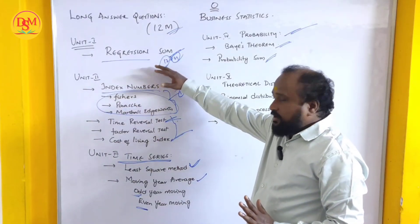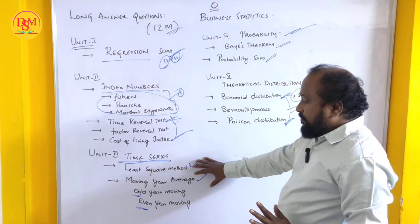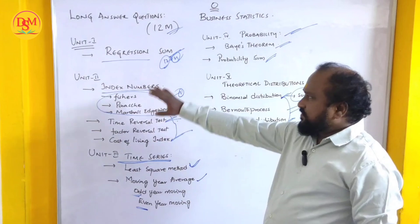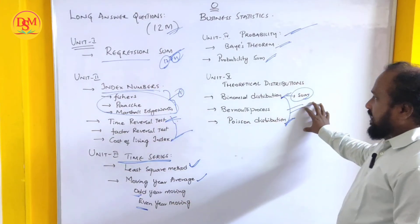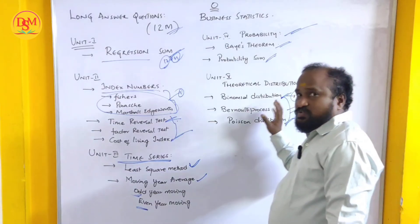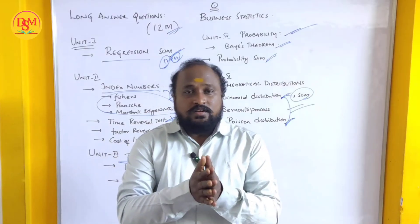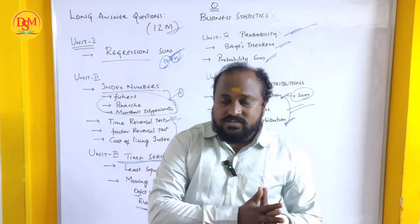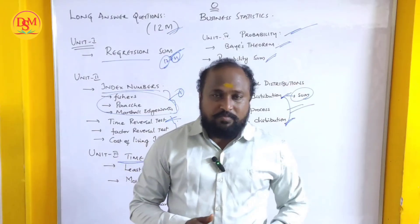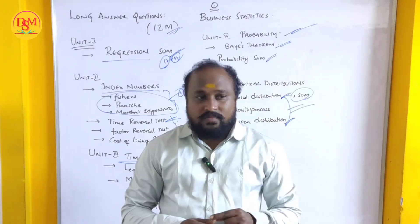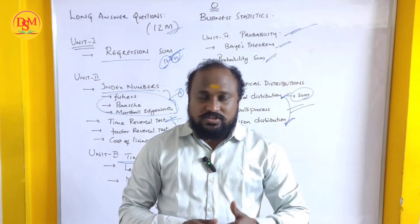Students who want to pass: Regression video is already uploaded, go through it. I'll upload the remaining videos soon. Just study Regression, Index Numbers, Moving Average, and in the last unit Binomial Distribution and Poisson Distribution — that's more than enough. Students who want to score full marks in Business Statistics can do it. Please share this video so nobody fails. Anyone can pass, so keep watching!